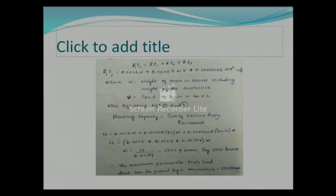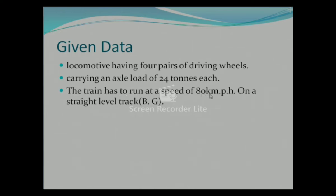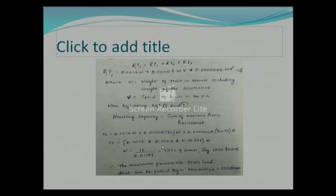Equating Equation 1 and Equation 2, and substituting V = 80 kmph as given in the problem — the train runs at 80 kilometers per hour on a straight level track — I solve for W. The result is W ≈ 1350 tons. We have successfully found Case 1: the maximum permissible train load that can be pulled by the locomotive is 1350 tons.